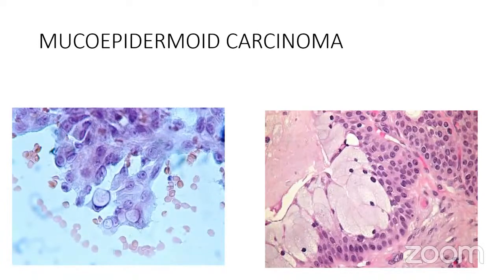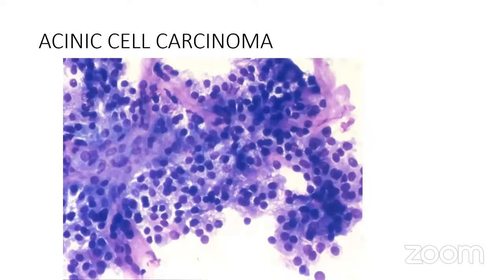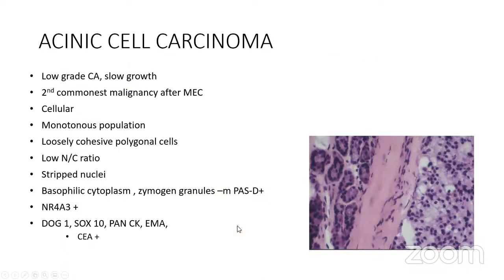Mucoepidermoid carcinoma shows a mixture of glandular, intermediate, and squamoid cell types. Acinic cell carcinoma resembles salivary gland acini with zymogen granules, traversing capillaries, granular cytoplasm, and often dispersed bare nuclei — the same appearance is seen in pancreatic acinic cell carcinoma. The population is monotonous and loosely cohesive, NC ratio is not very high, and zymogen granules are PAS-diastase positive.